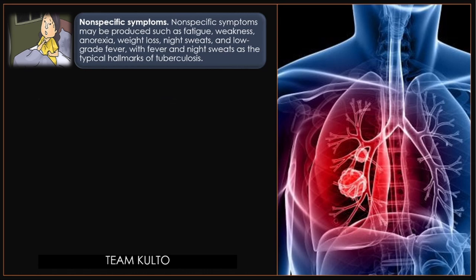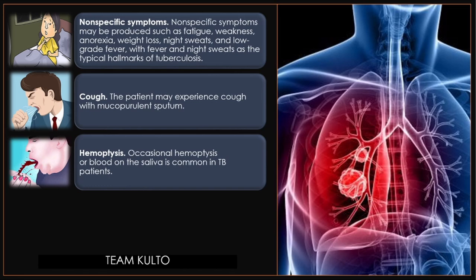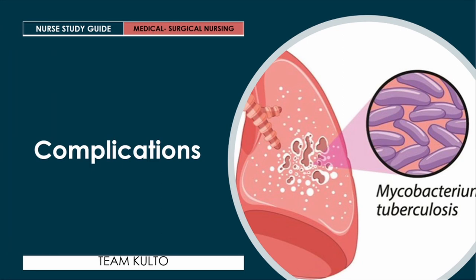Cough — the patient may experience cough with mucopurulent sputum. Hemoptysis — occasional hemoptysis, or blood in the saliva and sputum, is common in TB patients. Chest pain — the patient may also complain of chest pain as part of the discomfort.